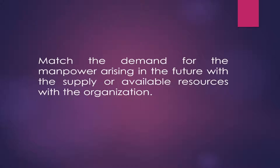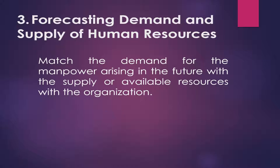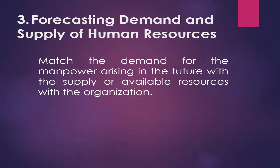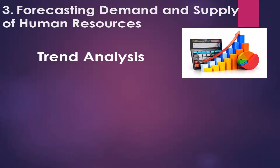The third step is forecasting demand and supply of human resources. Once the inventory of talented manpower is maintained, the next step is to match the demand for manpower arising in the future with the supply or available resources within the organization. The required skills of personnel for a particular job are matched with the job description and specification. Trend analysis is more appropriate for an existing business because it requires historical staffing data to make future staffing predictions. This creates a relationship between past and future staffing needs by linking the two using a performance or financial metric called an operational index.